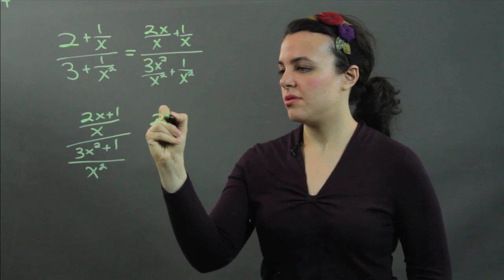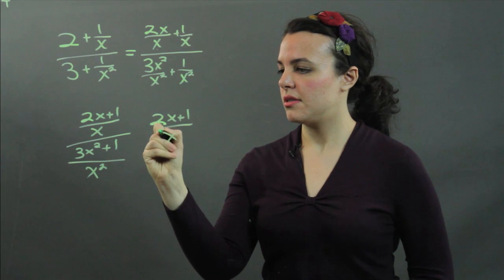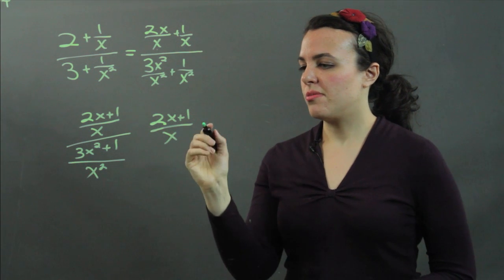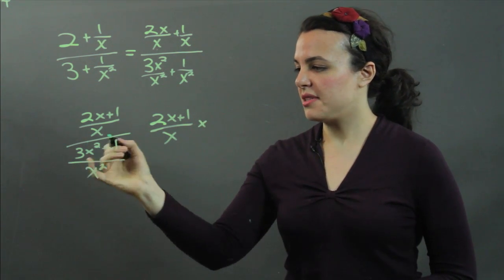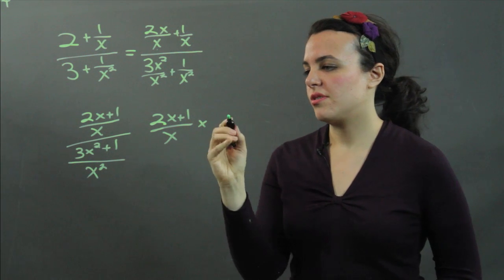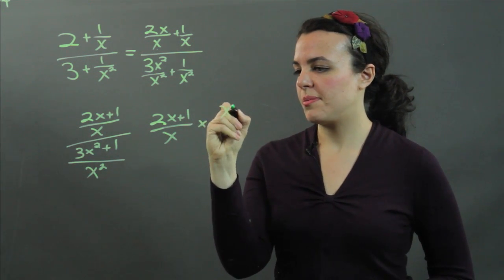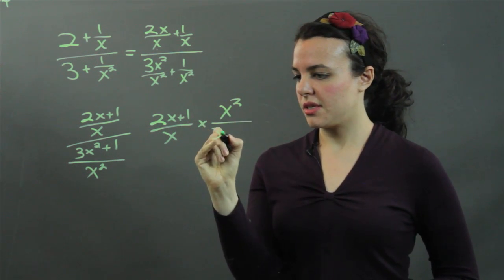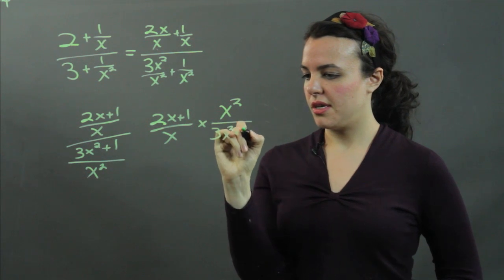So we have (2x + 1)/x. We change division to multiplication and flip the second fraction. We have x² on top now and 3x² + 1 in the denominator.